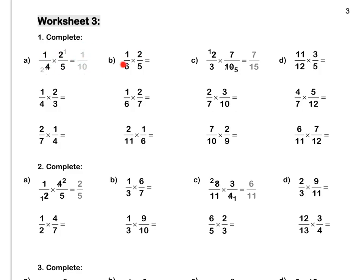Let's do B together. We can simplify our 2 and our 6 — we can divide them both by 2. 2 divided by 2 is 1, and 6 divided by 2 is 3. Then we multiply out to get one fifteenth.